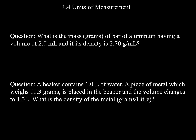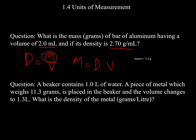Let's give it a try: what is the mass of a bar of aluminum having a volume of 2.0 milliliters and a density of 2.7 grams per mL? You can pause the video and try on your own. We use D = M/V. We know volume = 2.0 mL and density = 2.7 g/mL; we need to find mass. Rearranging: mass = D × V. Plugging in the values, you should get 5.4 grams. The worked-out answers will be posted on the CUNY Common Blackboard site.